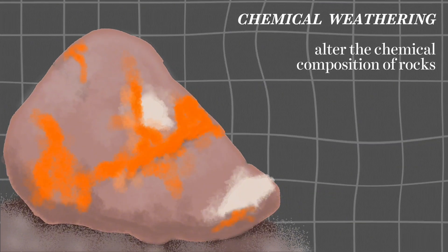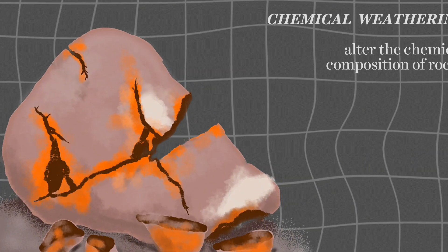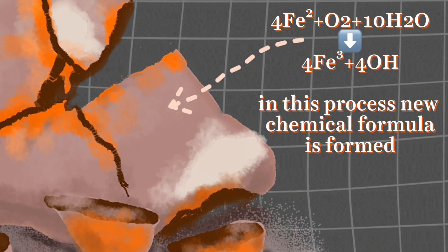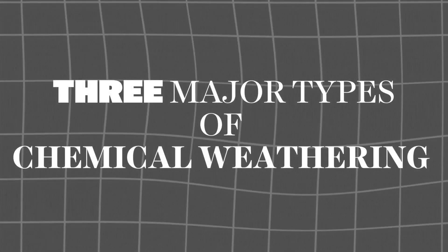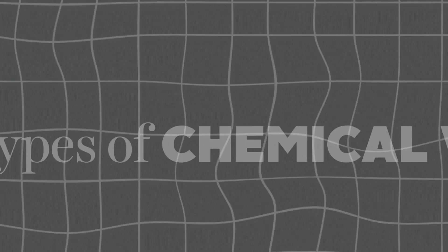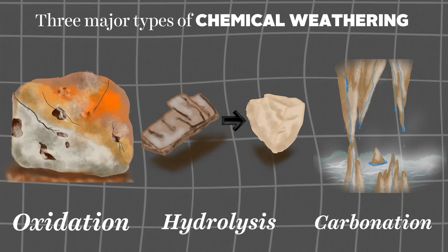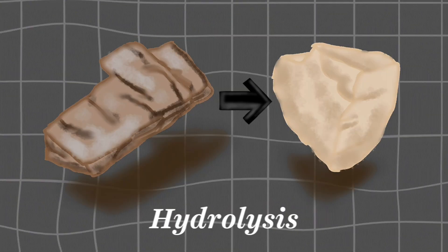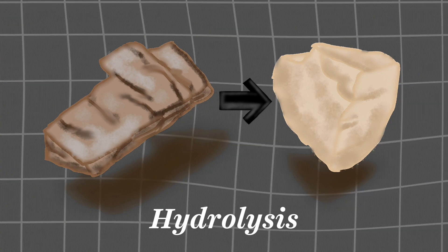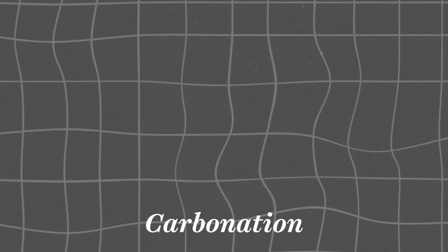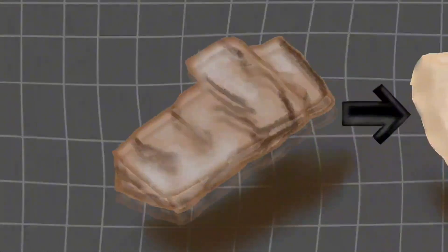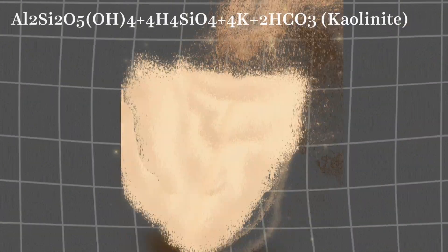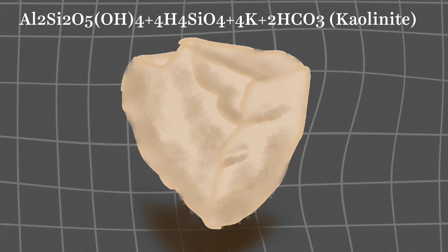Chemical weathering, on the other hand, involves the alteration of rock composition. It has three major types: namely oxidation, hydrolysis, and carbonation. For example, hydrolysis causes feldspar to turn into clay.